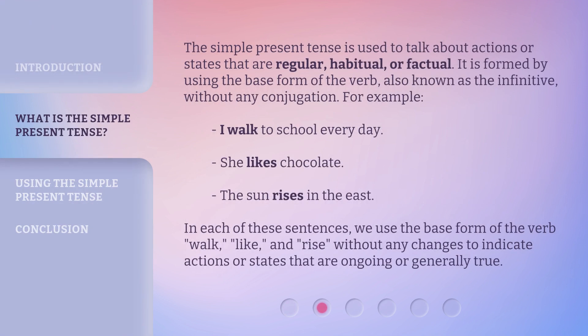The simple present tense is used to talk about actions or states that are regular, habitual, or factual. It is formed by using the base form of the verb, also known as the infinitive, without any conjugation. For example: I walk to school every day. She likes chocolate. The sun rises in the east.